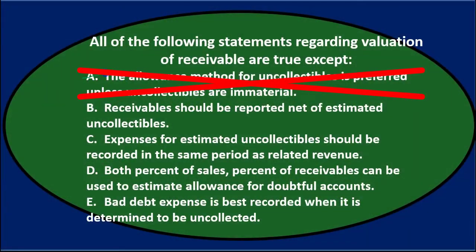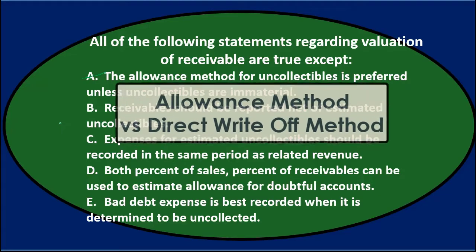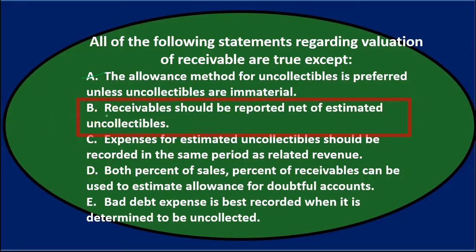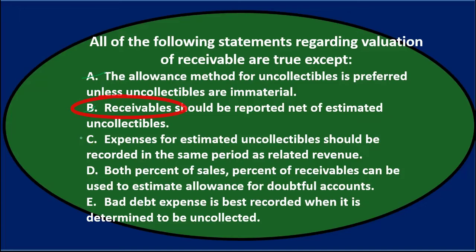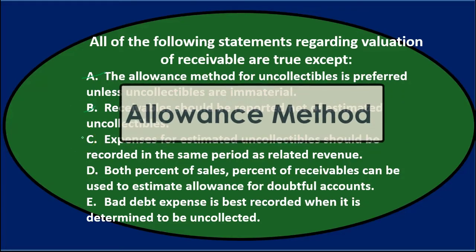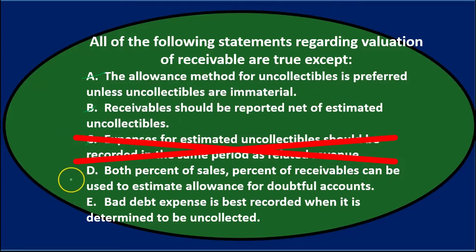A is true and therefore not the correct answer. B says receivables should be reported net of estimated uncollectibles — that's the allowance method, which is the preferred method, so that's also true. C says expenses for estimated uncollectibles should be recorded in the same period as related revenue — that reflects the matching principle, which is exactly what the allowance method does. So C is also true and not the correct answer.